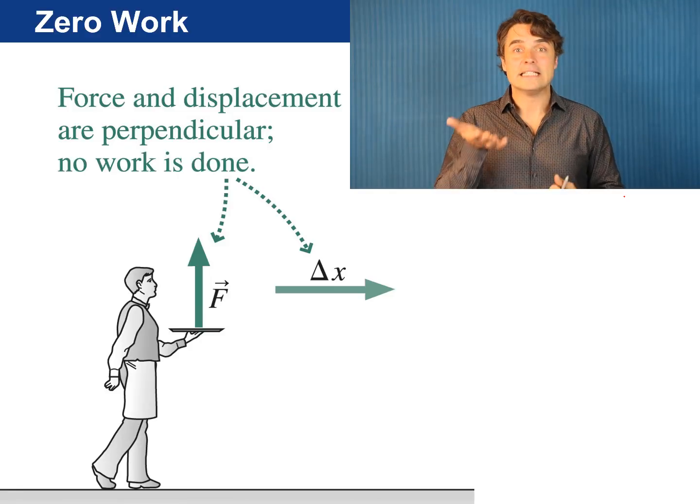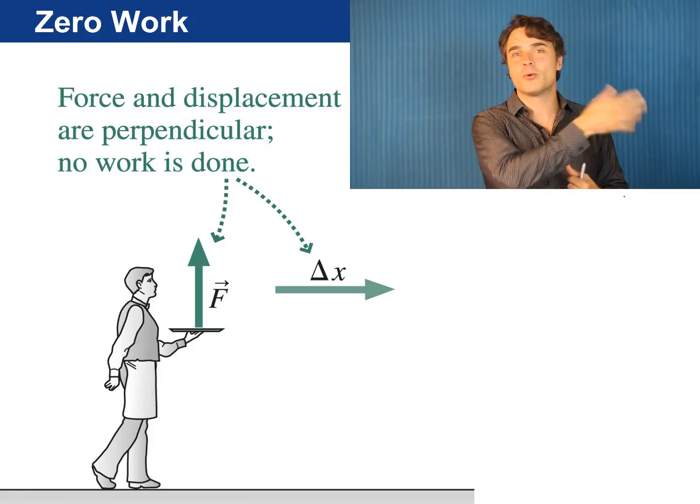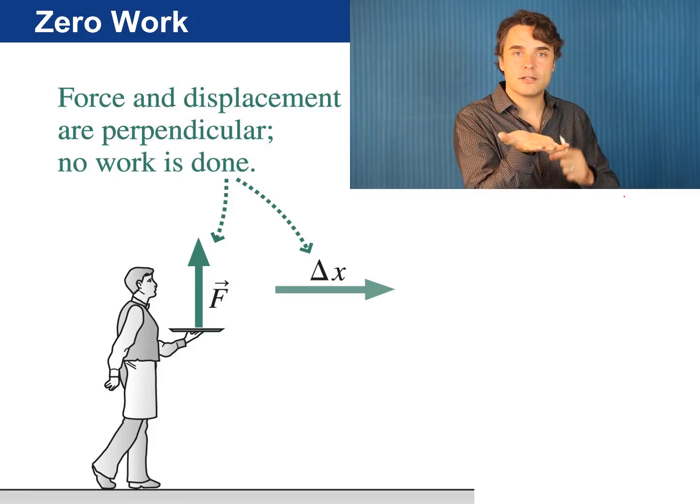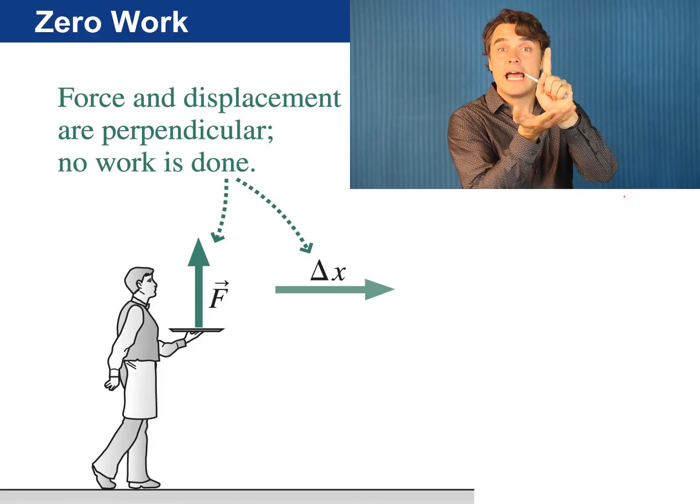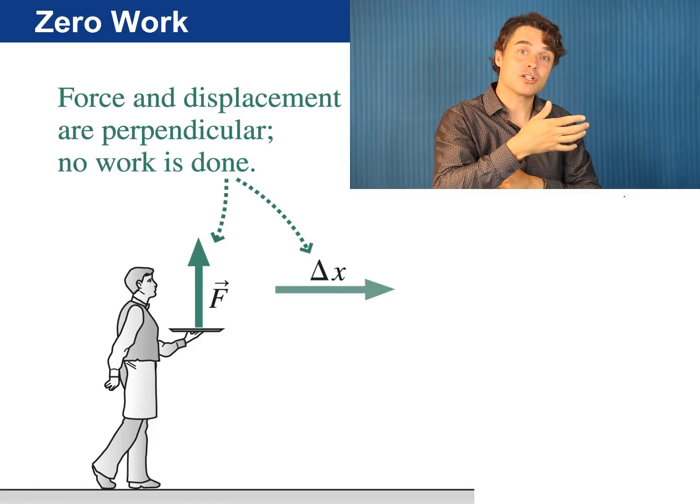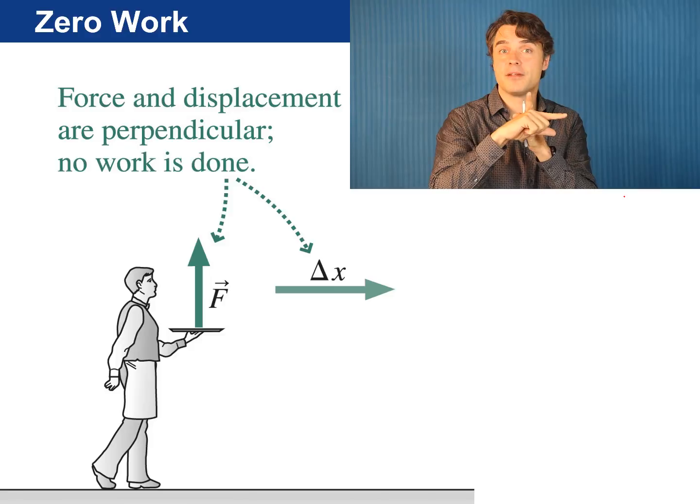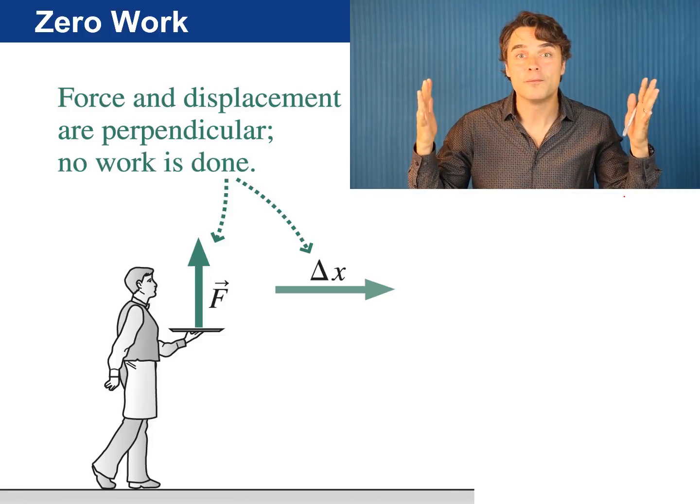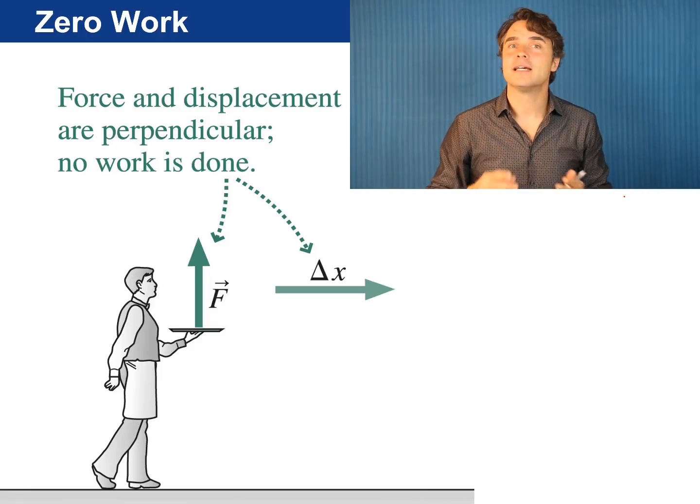This waiter is carrying a tray along at a constant velocity from the kitchen toward the dining area. The force that he applies to the tray is directly upwards in the y direction and the displacement is exactly sideways in the x direction. The force is perpendicular to the displacement. In this case the x component of the force is zero. The displacement is in the x direction and the work is zero.